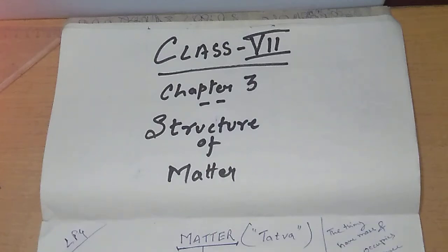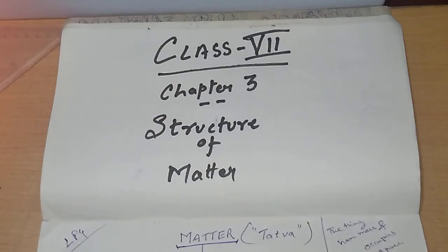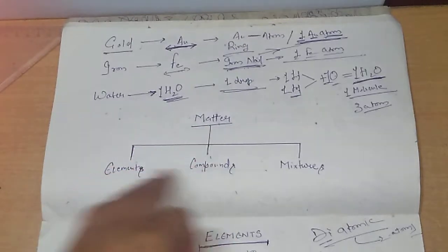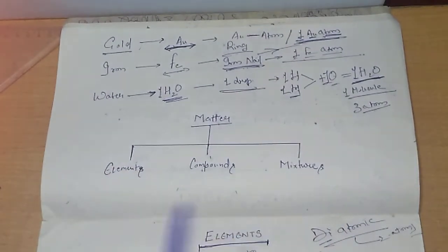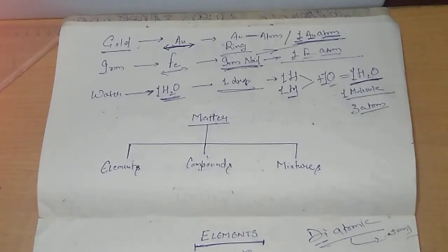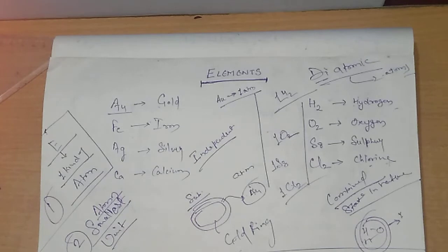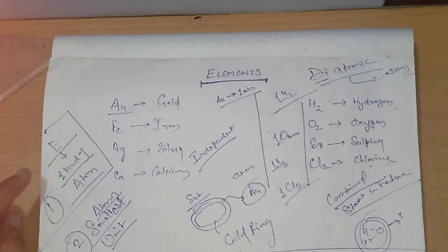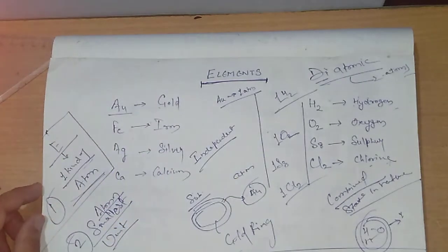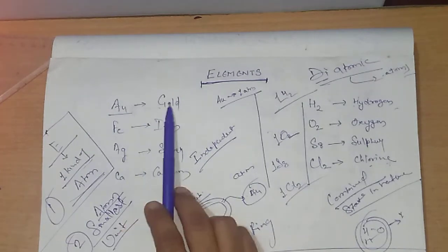Good morning students, welcome back to the YouTube channel of Business Public School. We will be continuing with Chapter 3 of Class 7, which is Structure of Matter. We are continuing our discussion with the bifurcation of matter into three categories: elements, compounds, and mixtures. Yesterday we discussed elements — let me remind you one more time. The smallest unit of any substance is an atom, and if a substance has only one kind of atom in it, it will be known as an element. For example, gold (Au) is having only one kind of atom.